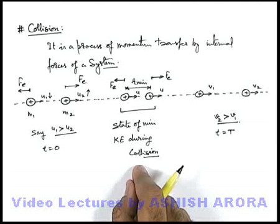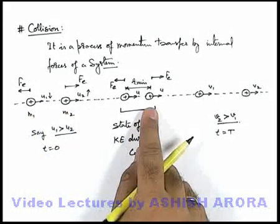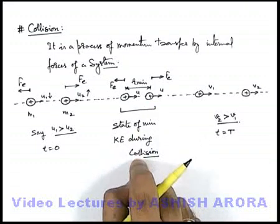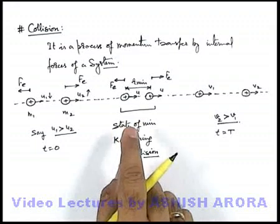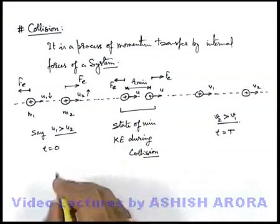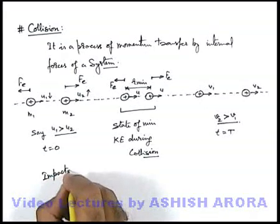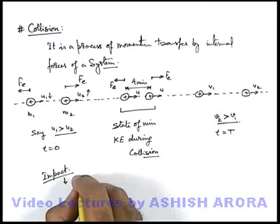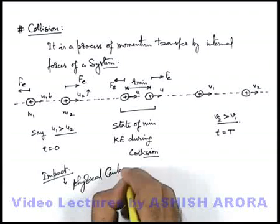We can also see here that there is no physical contact taking place between the bodies. So in a collision, it is not necessary that the bodies will come in physical contact. And when bodies do come in physical contact, that is called a special type of collision — we call it impact. Impact is the one where physical contact occurs.